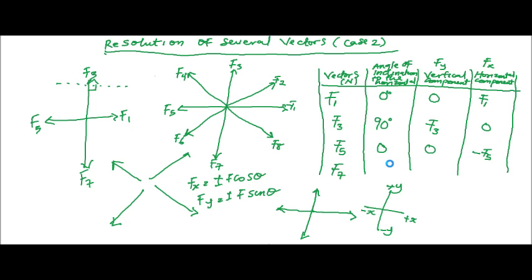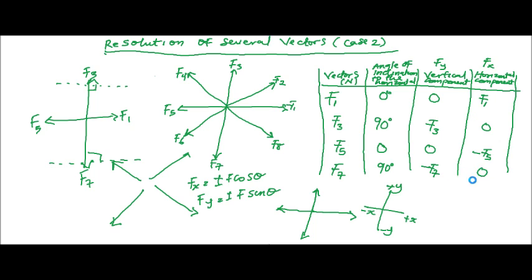The last one is F7. F7 has a component on negative Y. The angle of inclination — if you draw a horizontal line, it is 90 degrees. So the angle of inclination of F7 to the horizontal is 90 degrees. It has a component on negative Y, so that would be minus F7. The horizontal component is zero because it doesn't have a component on X.